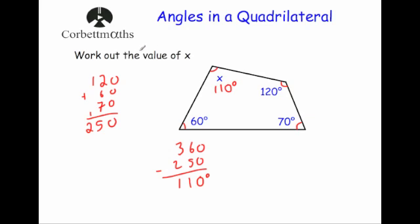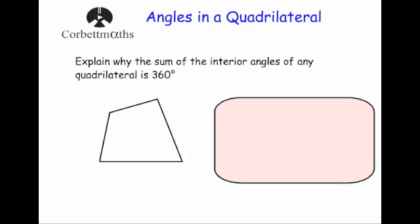These are quite common questions where you've been given a quadrilateral with three angles and you need to work out the fourth one — you just add them together and take that away from 360. Now this next question asks us to explain why the sum of the four angles adds together to give you 360 degrees, or why the sum of the interior angles of any quadrilateral is 360 degrees.